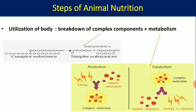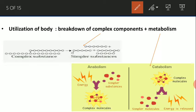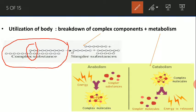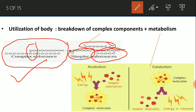The next step is the utilization of food by the body, which occurs in two steps. The first is the breakdown of complex components and the second is metabolism. Complex substances are broken down by special proteins (enzymes) that break the bonds, converting complex substances into simple substances. This transformation is known as the breakdown of complex components, also called digestion.